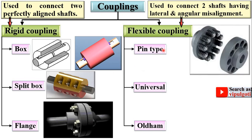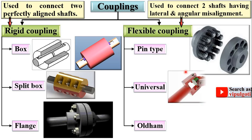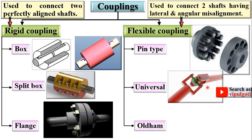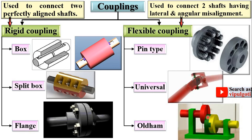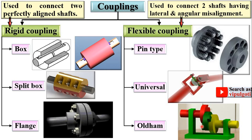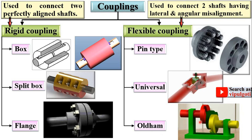Flexible coupling is further classified as pin bush type coupling, universal coupling, and Oldham coupling. In pin bush type coupling, bushes are used to provide flexibility — it is a modification of the flange coupling. In universal coupling, both shafts are not parallel but have some angular offset, so universal coupling is used to transmit power. In Oldham coupling, the shafts are parallel but have some lateral offset distance, and power is transmitted across that offset.